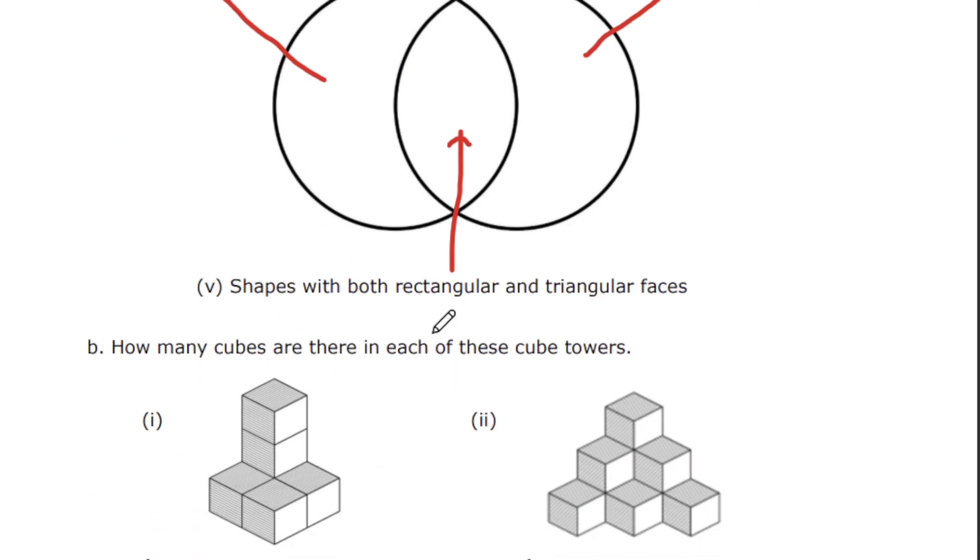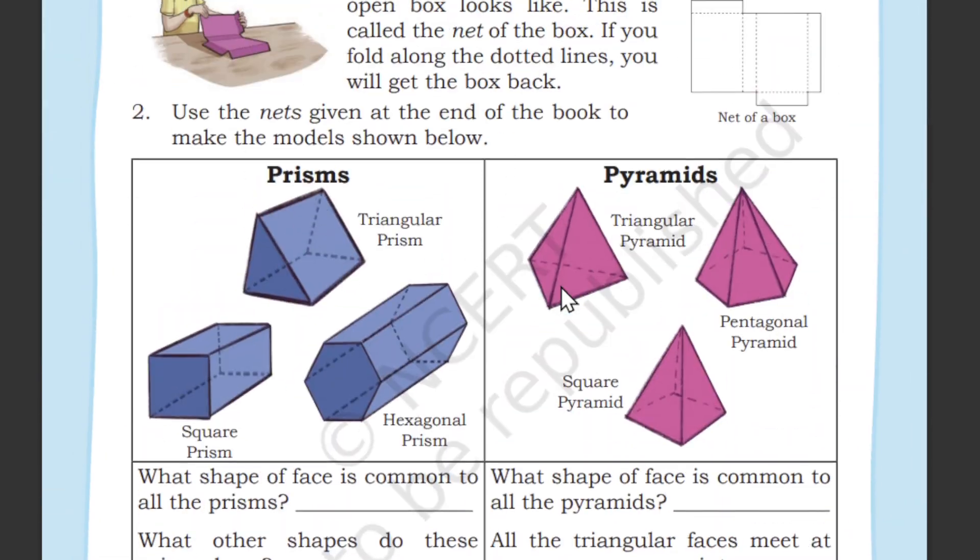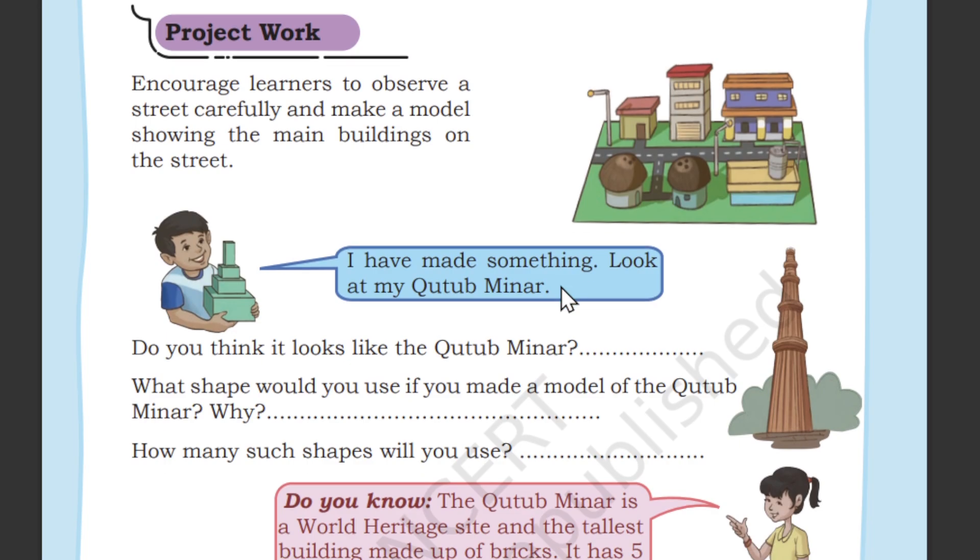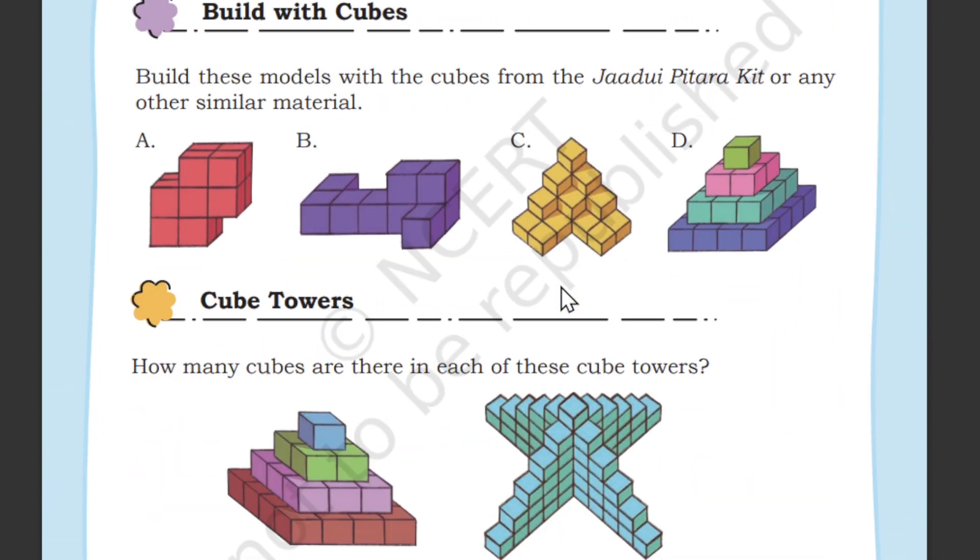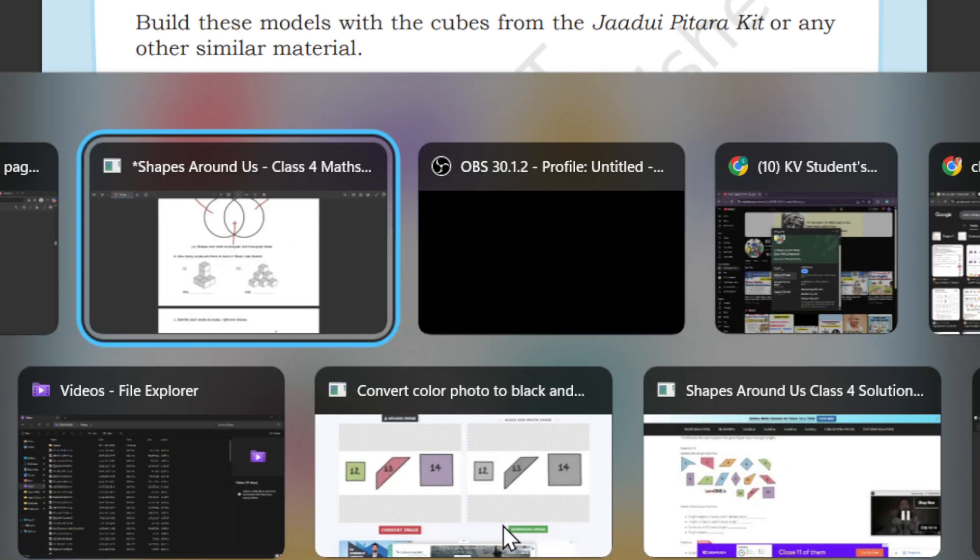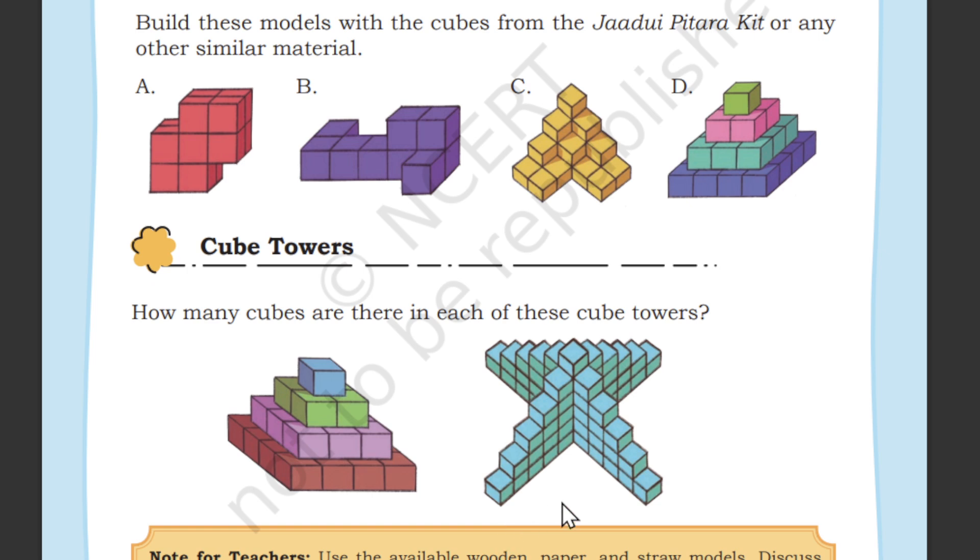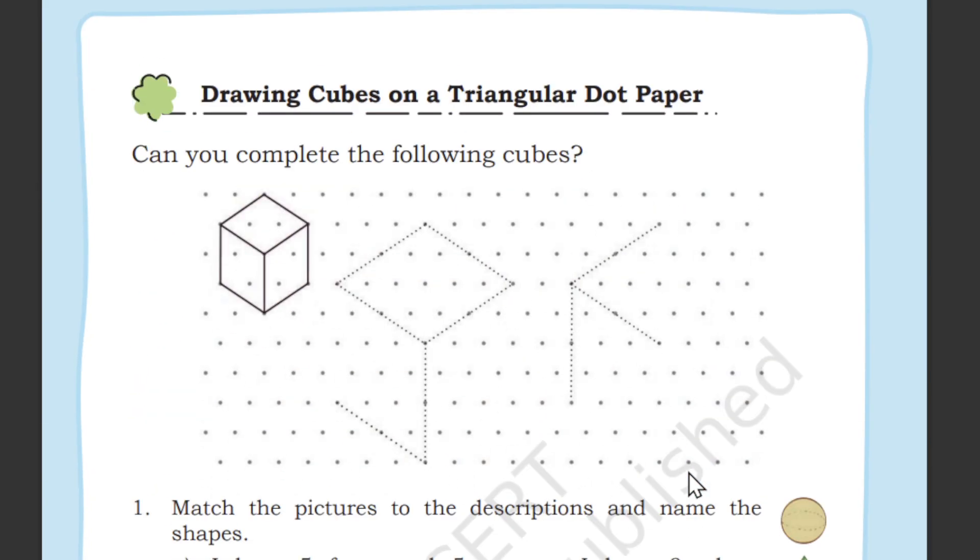This one, how many cubes are there in each cube tower? This is exactly your book-based question, but I have changed the shape of the tower because if I ask the same question, you can answer it very easily. So I have changed the tower. Here what we did, we just counted and wrote the answer. We have 1, 2, 3, 4 sides and we added and multiplied and wrote the answer. This is also clearly explained in the video. If you missed watching the video, it is very important. You have to watch the video. Then only you can understand the concept.